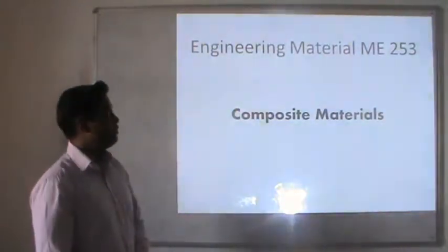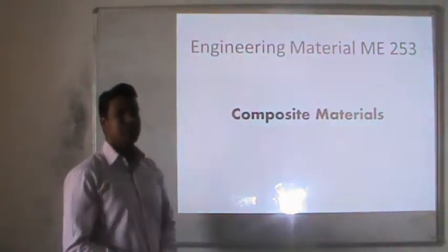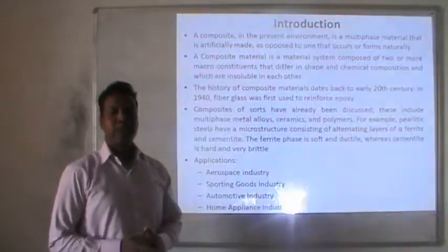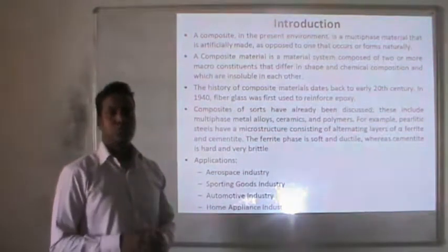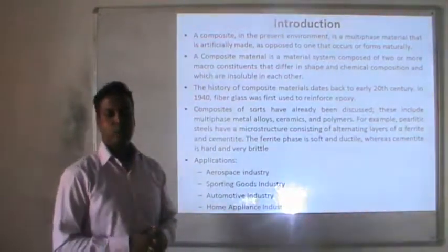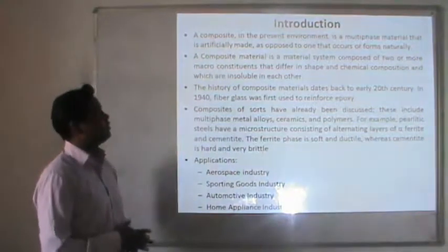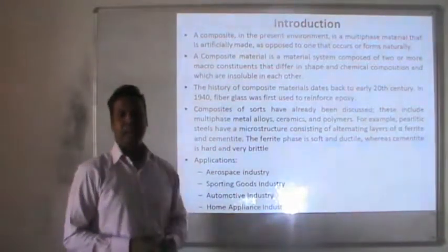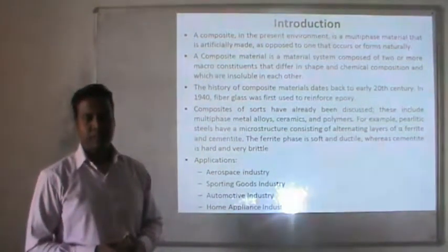Hello, good morning everyone. Today's topic of engineering material is composite material. A composite material is a material system composed of two or more micro-constituents that differ in shape and chemical composition, which are insoluble in each other. The composite is a multiphase material that is artificially made, as opposed to one that occurs naturally.